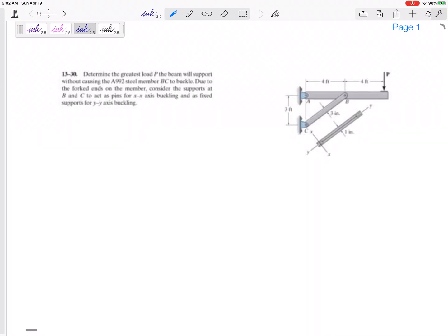Okay, let's look at this glass board problem. I apologize, this looks blurry on my screen. I think your PDF looks better. We want to determine the greatest load P that this beam can support without causing this A992 steel member BC to buckle.